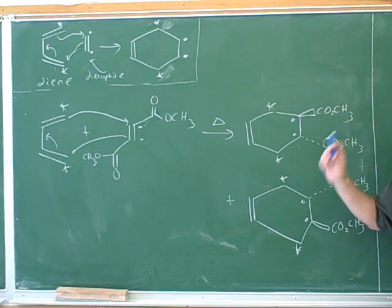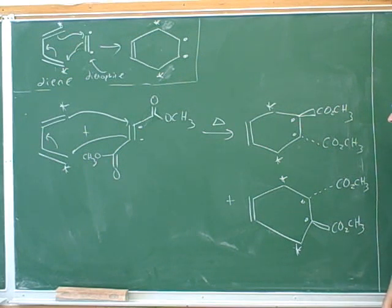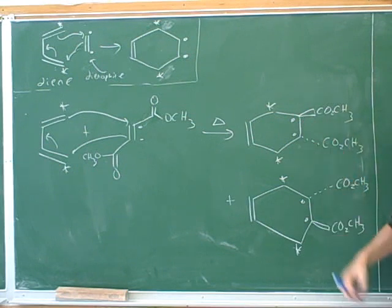Yeah. That means that it must have an enantiomer. That's the easiest way to proceed here. Since this is not meso, it must have an enantiomer. How do we know this is not meso? Because there's no plane of symmetry. There's no plane of symmetry, so it must have an enantiomer.